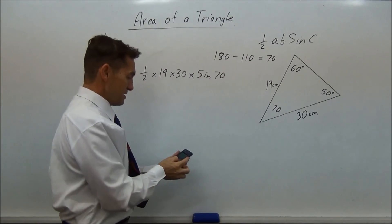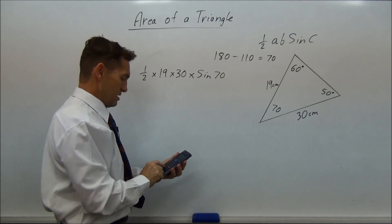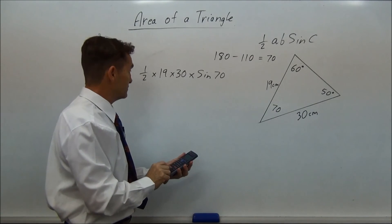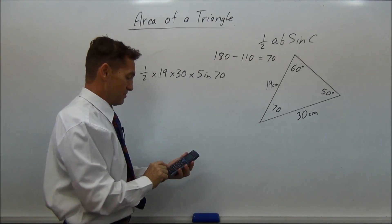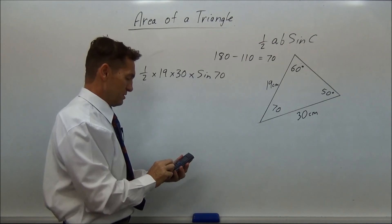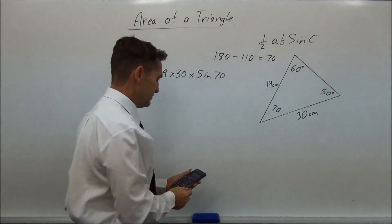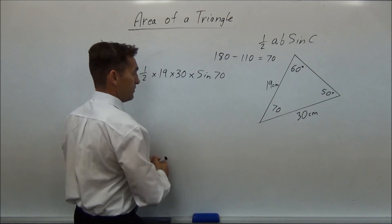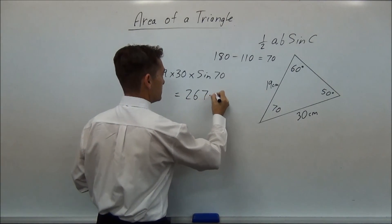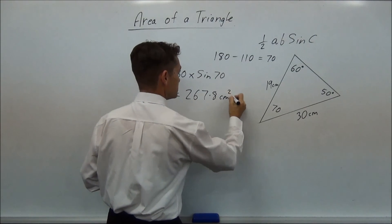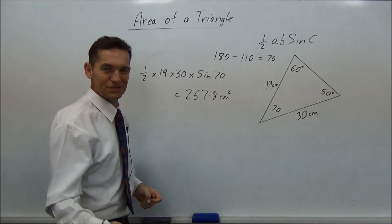Let's punch that into our calculator, and we get half multiplied by 19 multiplied by 30 multiplied by sine 70. And we get 267.8. So 267.8 cm squared, and we're done.